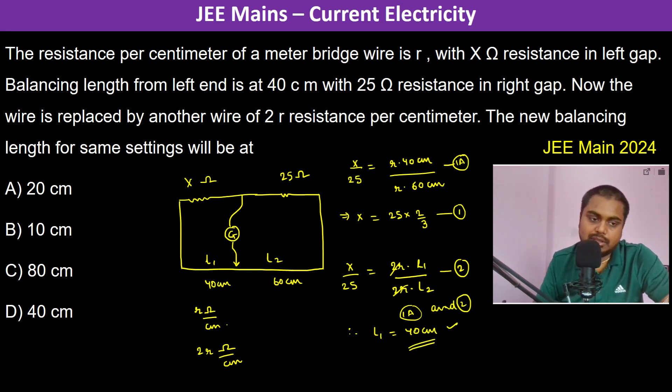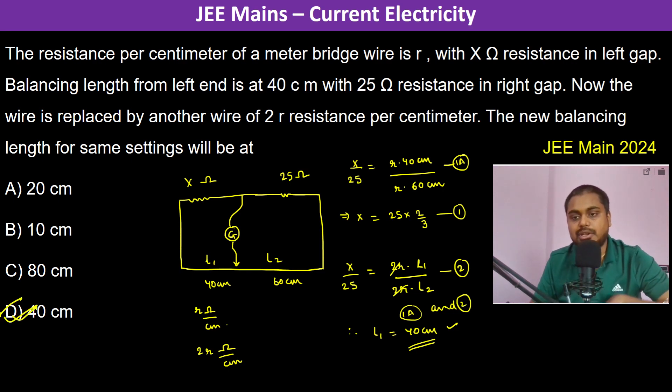On comparison, l1 again equals 40 centimeters only. Therefore the answer is the same — the new balancing length is again 40 centimeters itself. Thank you.